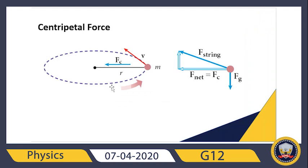For example, here we have a mass moving in a circular path. We have velocity, radius, and acceleration, but we need centripetal force because this force keeps the object moving in a circle at all times. If we don't have a centripetal force, the object will keep moving in a straight line in the direction of its velocity. Because we have centripetal force, the object changes direction each second and continues moving in a circular path.